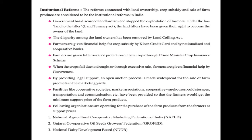The next topic is institutional reforms. The reforms connected with land ownership, crop subsidy, and sale of farm products are considered to be institutional reforms in India. The government has discarded landlordism and stopped farmer exploitation under the Land Tenancy Act, giving land tillers the right to become the owner of the land. The disparity among land owners has been removed by the Land Sealing Act. Farmers are given financial help for crop subsidy by Kisan Credit Card and by nationalized and cooperative banks. Farmers are also given full insurance protection through the Prime Minister Crop Insurance Scheme. When crops fail due to drought or excessive rain, farmers are given financial assistance by the government. By providing legal support, an open auction process has been made widespread for the sale of farm products in marketing yards.